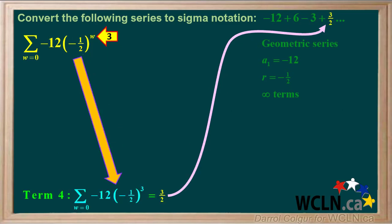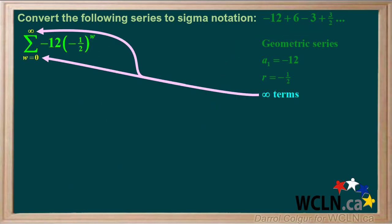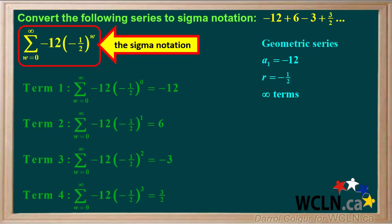For term 4, we'll put in 3 for w. Negative one half to the power of 3 equals negative one eighth, and negative 12 times negative one eighth equals positive 3 over 2, which is the correct value for term 4. Because we have an infinite number of terms in this series, w can range from 0 to infinity. So this is the correct sigma notation for the given series.